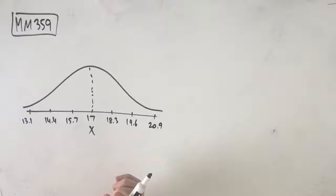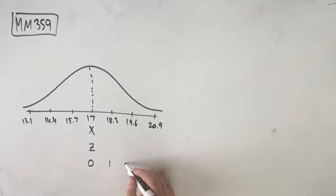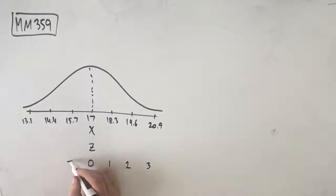Now z is the z value which corresponds to the amount of standard deviations away from the mean we are. So what I like to do is draw this and draw corresponding z values. So at the mean we are 0 standard deviations away from the mean so our middle is 0. At 18.3 we've gone up by 1.3 which is our standard deviation so we're up at z equals 1 and so on: 1, 2, 3, negative 1, negative 2, negative 3.